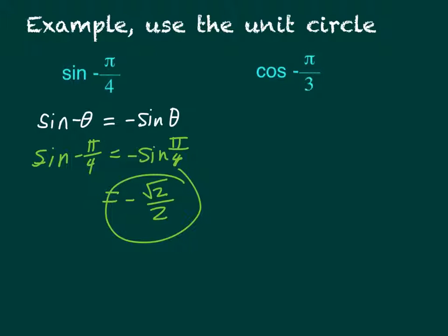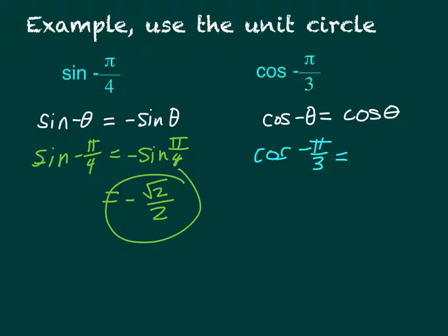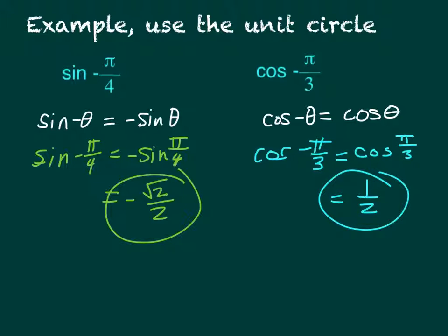For the next example, we have cosine of negative pi over 3. Since cosine is an even function, cosine of negative pi over 3 equals cosine of pi over 3. This is a 60-degree angle, and the cosine at 60 degrees is 1/2 — that is the x-value. So your answer is 1/2.